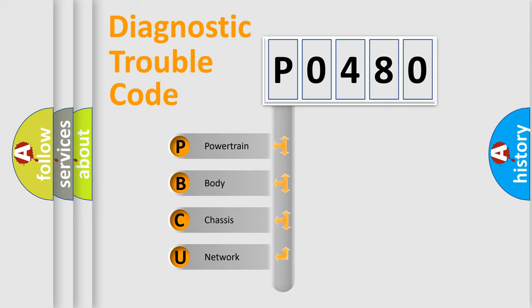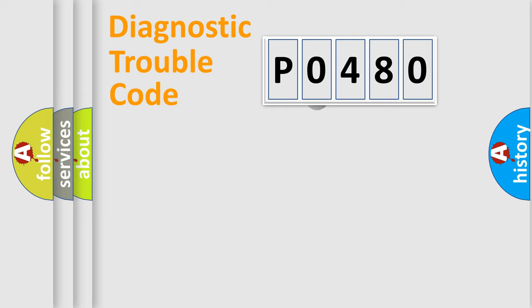We divide the electric system of automobile into four basic units: Powertrain, Body, Chassis, Network. This distribution is defined in the first character code.